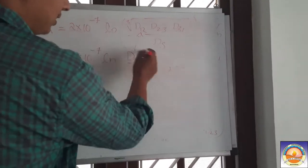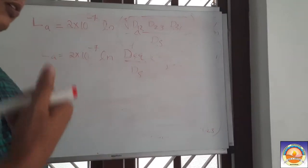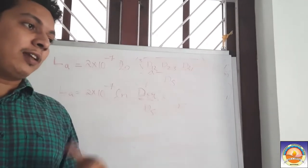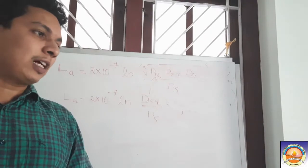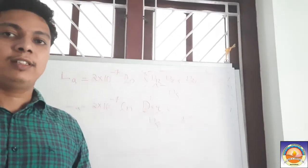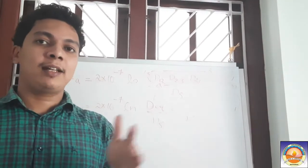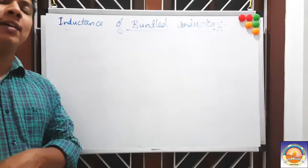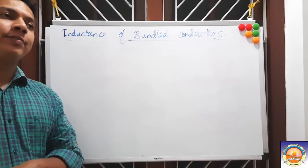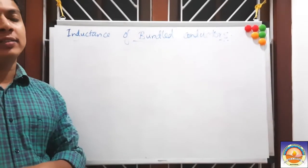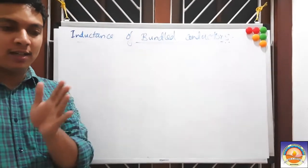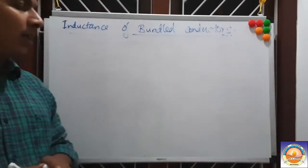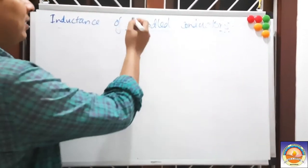In the next part we will see bundle conductors. This is the last portion of inductance topics. We have covered: inductance of composite conductors, inductance of three-phase lines with equilateral spacing, and inductance with unsymmetrical spacing using transposition.